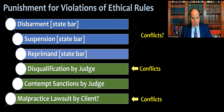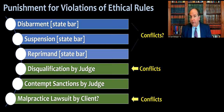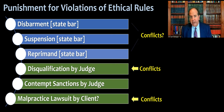They can also suspend you, or give you the mildest sanction — the one you're hoping for if you get in trouble — which is a reprimand. There can be private or public reprimands. With a private reprimand, you're the only one who knows about it, although the bar will keep it in their file so that if you get in trouble again, they know you were reprimanded previously. Suspensions are the most common.